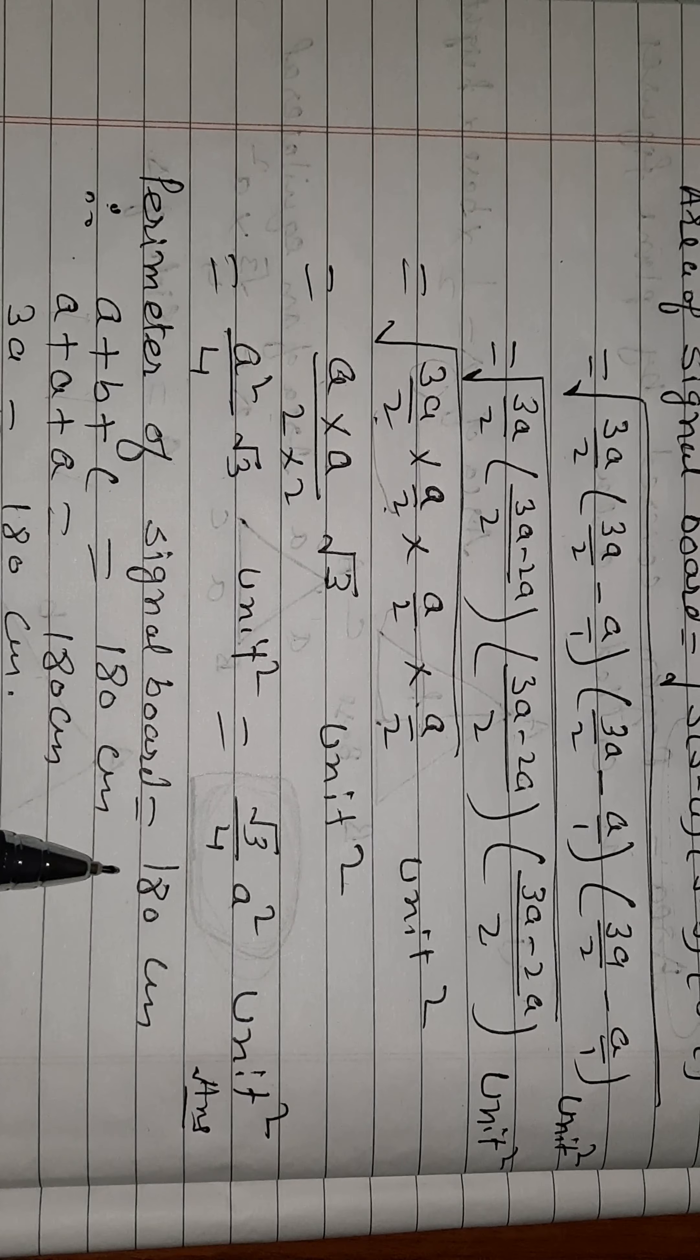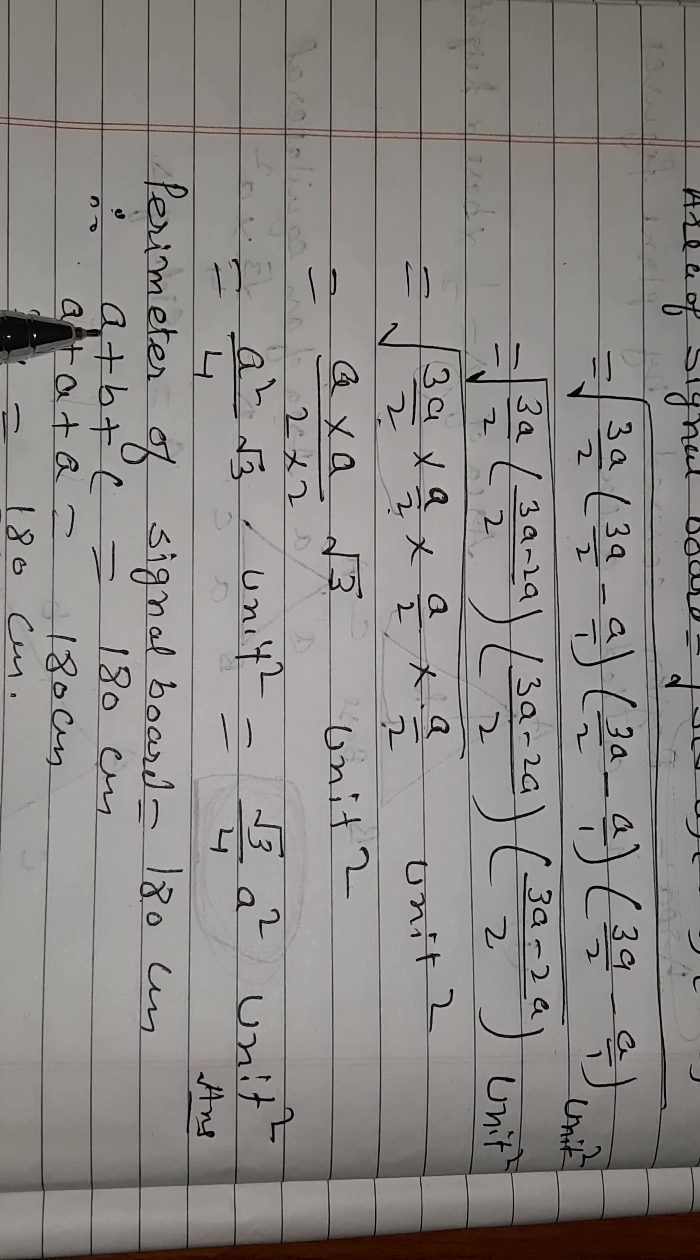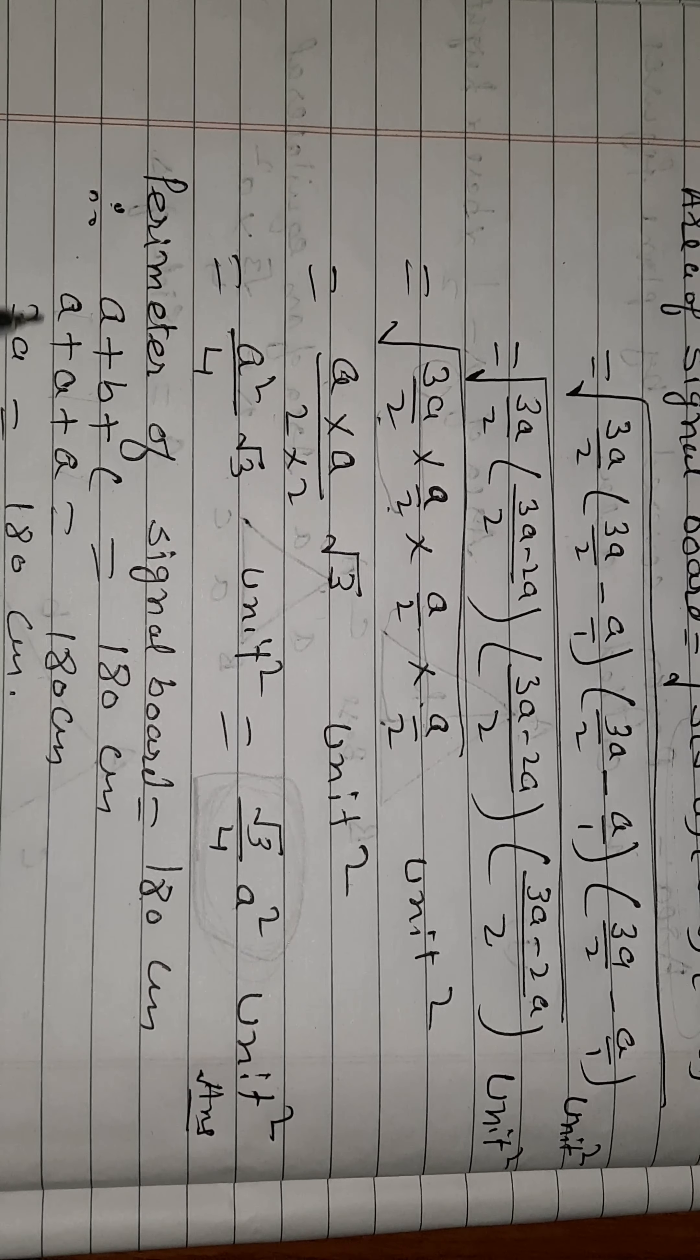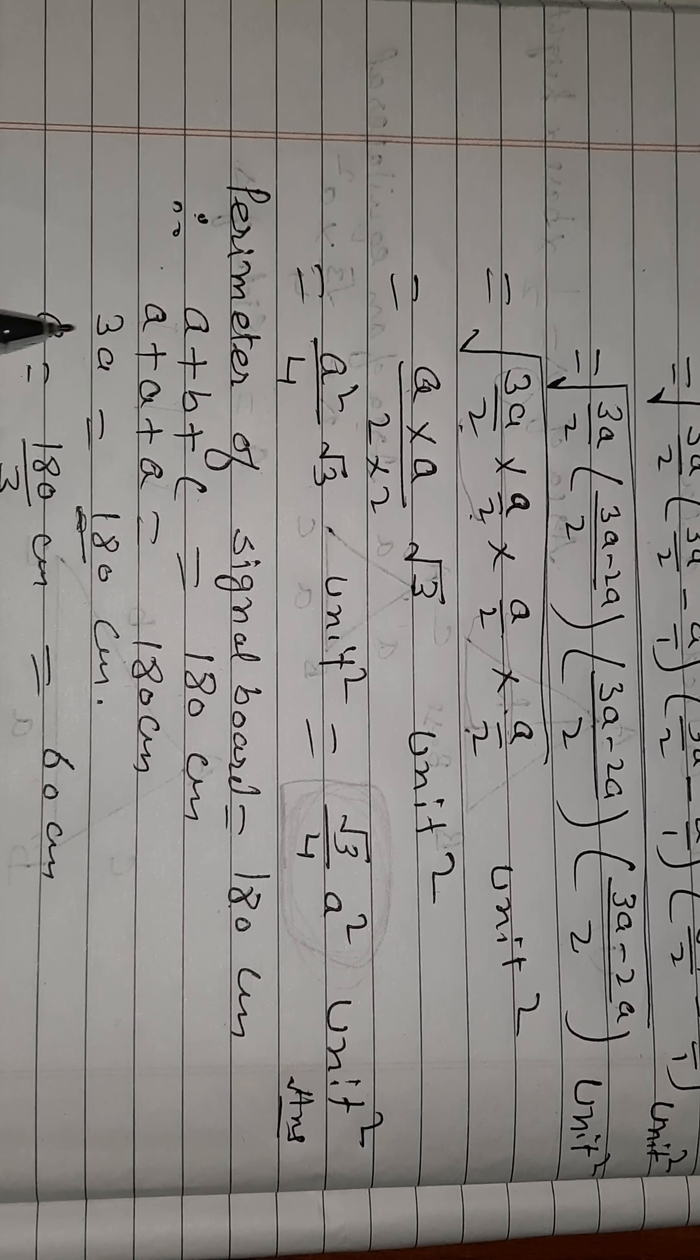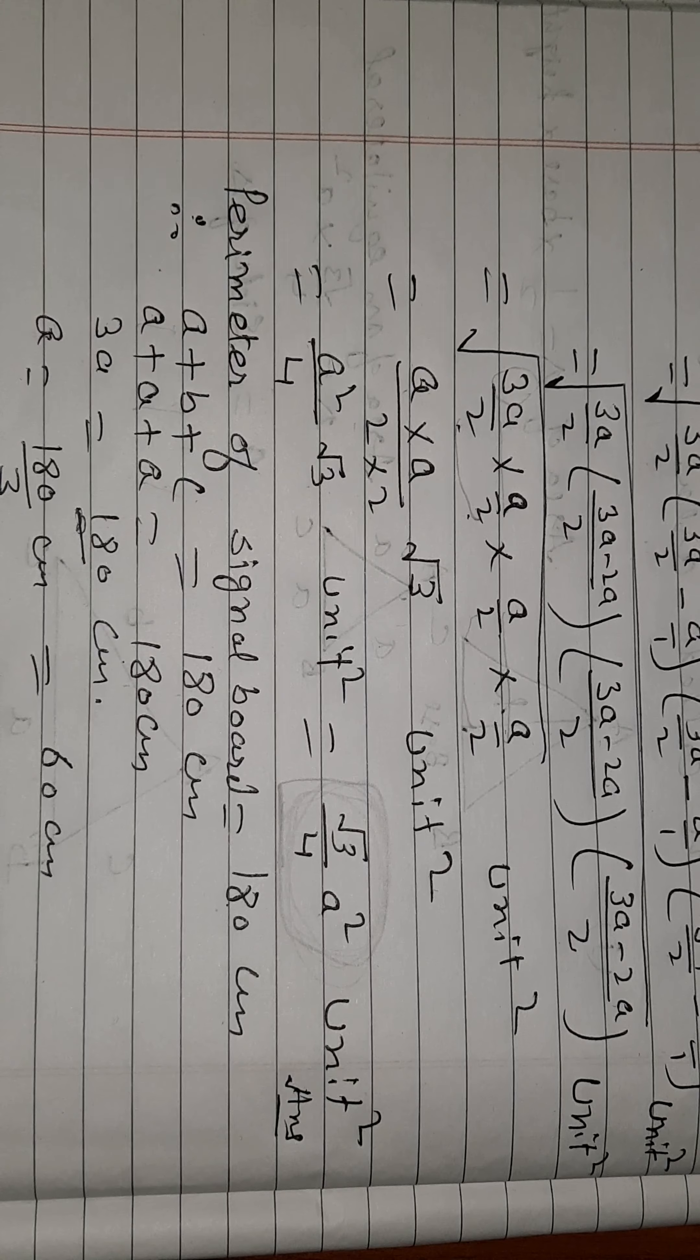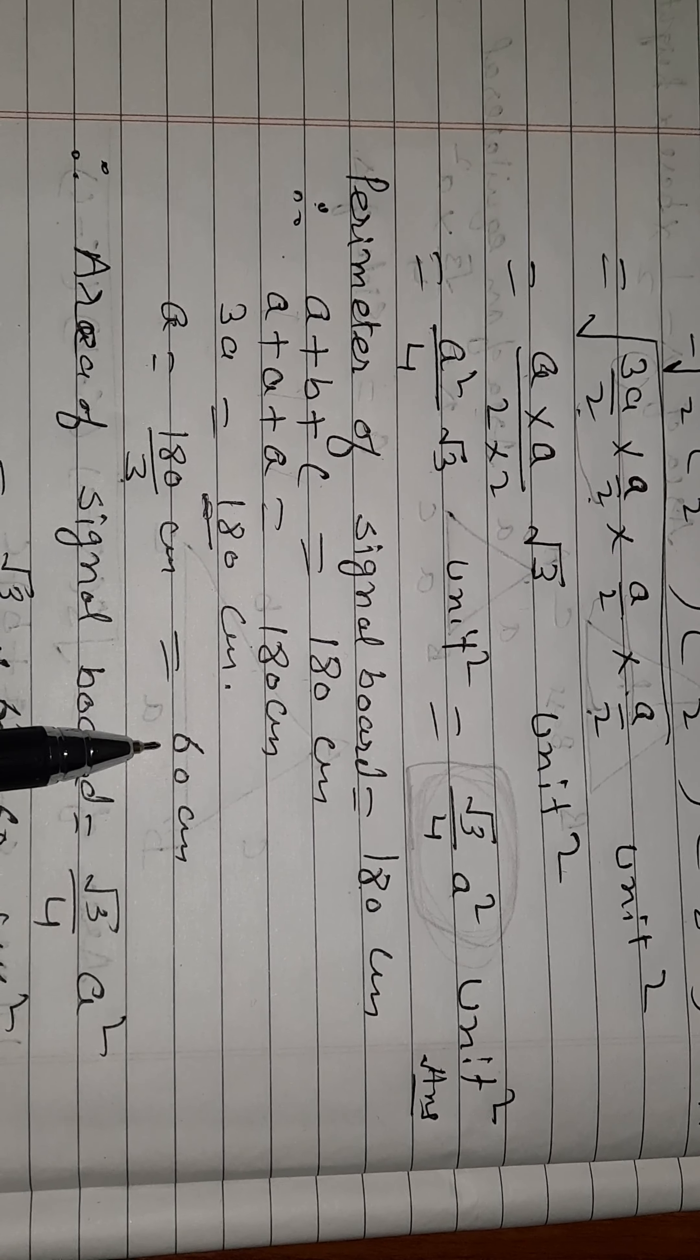Perimeter of the signal board is equal to 180 cm. Perimeter is the sum of three sides of the triangle: first side + second side + third side = 180 cm. So a + a + a = 180 cm, which gives 3a = 180 cm. Therefore a = 180/3 = 60 cm. Each side of the signal board is 60 cm.